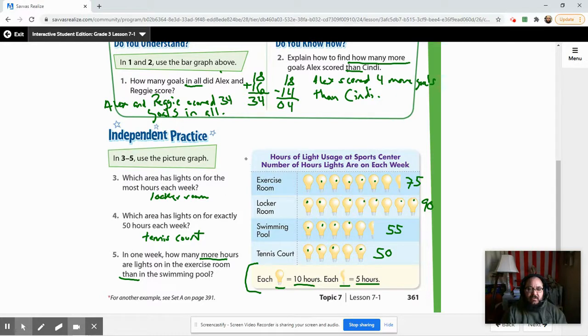And then in one week, how many more hours are on in the exercise room than in the swimming pool? Look at the hints, more than. That means we are looking at subtraction, right? So if we have the exercise room, we know the exercise room is 75, we're going to say, okay, so we've got 75 for the exercise room. The swimming pool has 55. So we're going to subtract those. 5 minus 5 is 0. 7 minus 5 is 2. So now we have in one week, the exercise room uses 20 more hours of light. The lights are on for 20 more hours than the swimming pool. Our answer here is 20, okay?